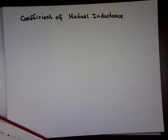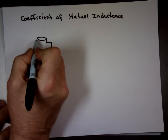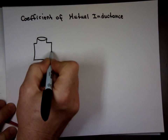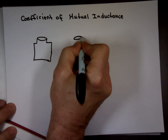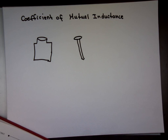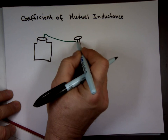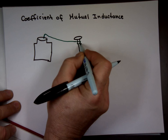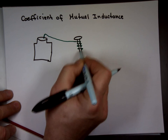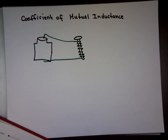You've probably done this when you were young. You took a battery, took a nail, took a wire, and wrapped it around the nail and attached it. What happens to that nail? It becomes magnetized — that nail becomes a magnet.